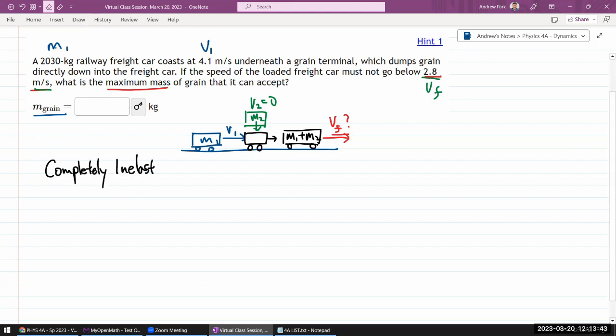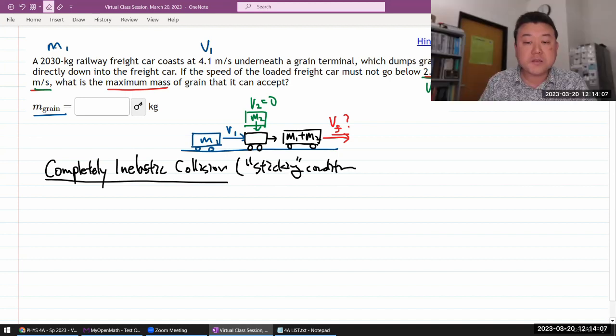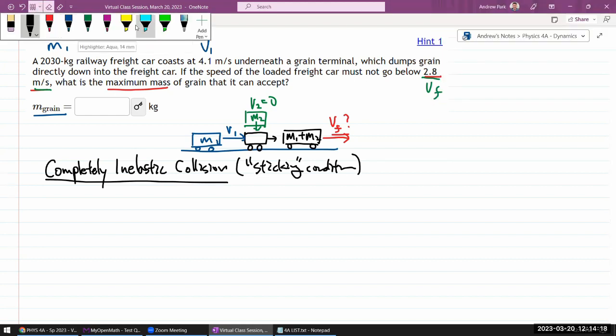And there are two things to watch out for when you're dealing with a completely inelastic collision. In terms of identifying it first, identifying completely inelastic collision, you are looking for some kind of sticking condition. Something that forces whatever objects are colliding to move together after the collision.